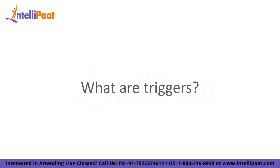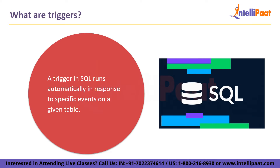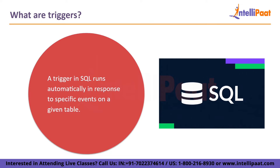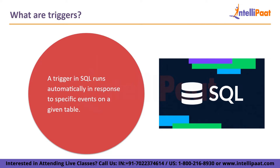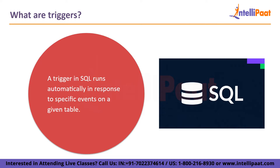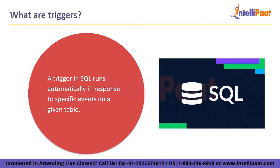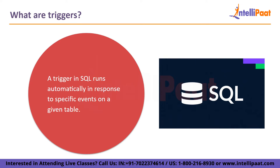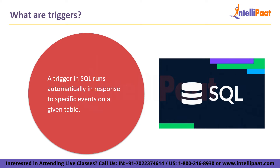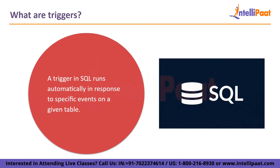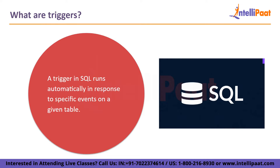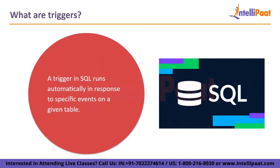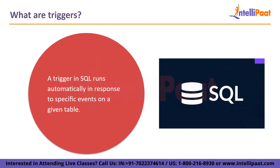Let us begin by understanding what are triggers. The SQL code known as triggers is run automatically in response to specific events on a given table. These are employed to keep the data's integrity. A trigger in SQL functions similarly to a trigger in the real world — for instance, a bullet is shot when a gun trigger is pulled. But how does it relate to SQL triggers?